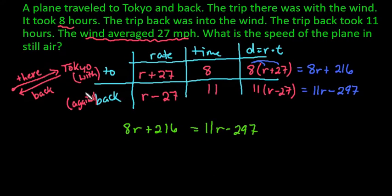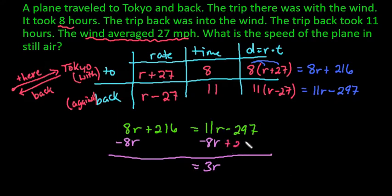So we would just take and subtract the 8r from both sides, and the reason I'm subtracting the 8r is because it's smaller, and that way I have a positive value. And at the same time, we want to move the non-variable terms to the other side, so I would add the 297 to both sides, and when I do that I end up with 513.